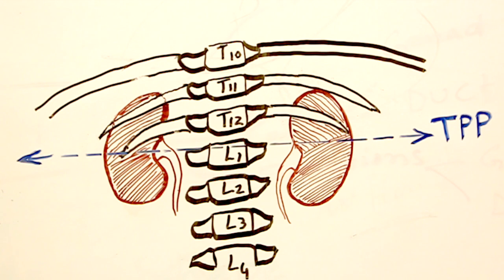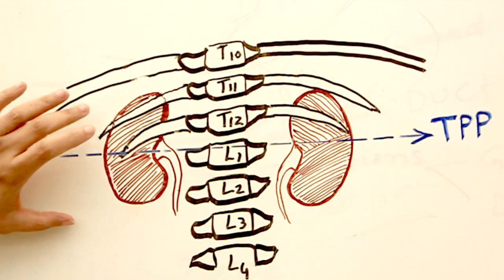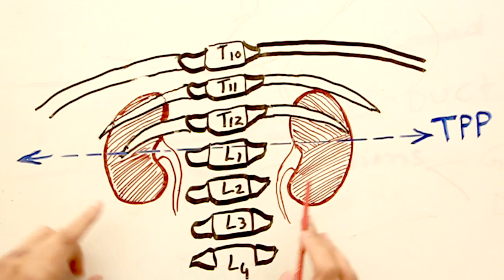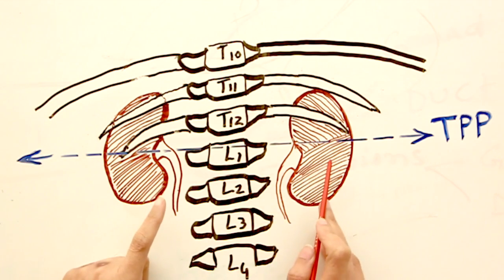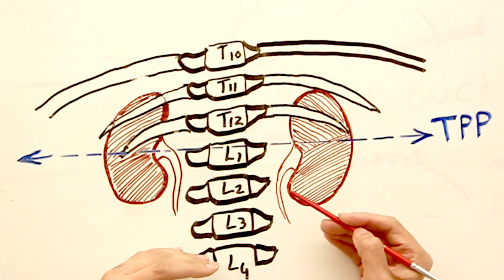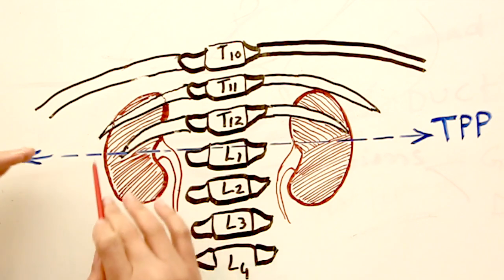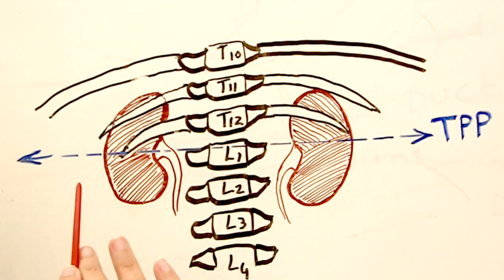To understand the difference between right and left kidneys regarding surface marking: the right kidney is covered posteriorly by the twelfth rib, while the left kidney comes under the cover of both the eleventh and twelfth ribs. The hilum of the right kidney is below the level of the transpyloric plane, while the hilum of the left kidney is at the level of the transpyloric plane.